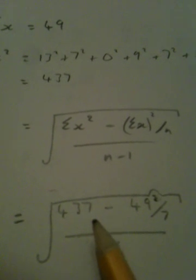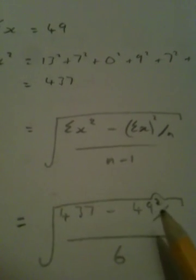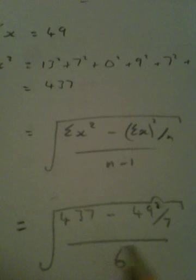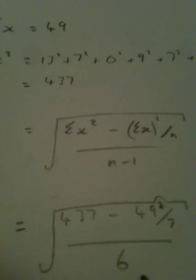So there we are: 437 subtract 49 squared divided by 7, all over 6. So if we're going step by step, work out what's on the top. That'll be 94, still got to divide by 6, still got to square root.